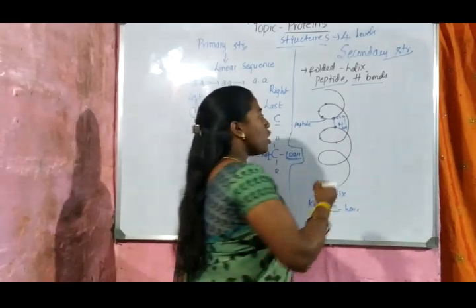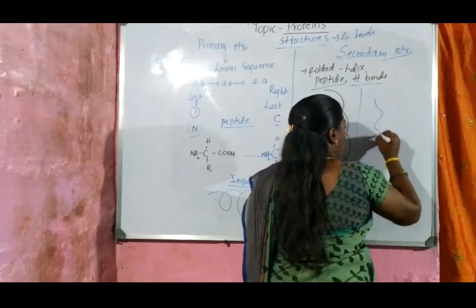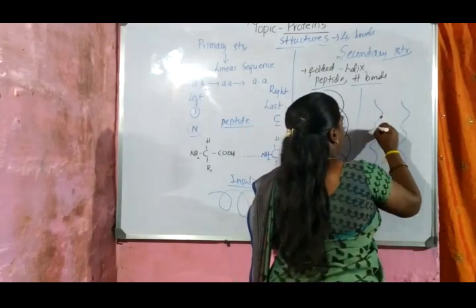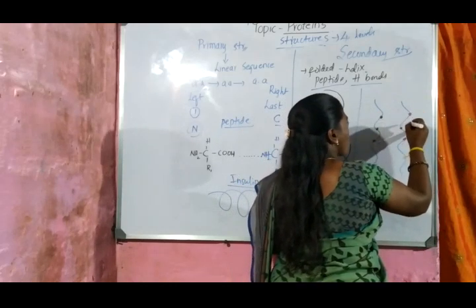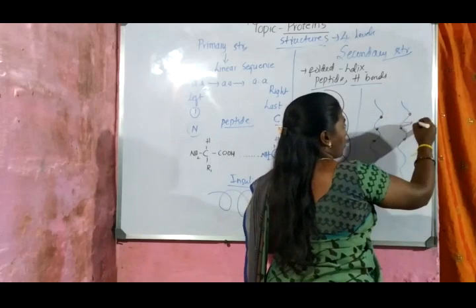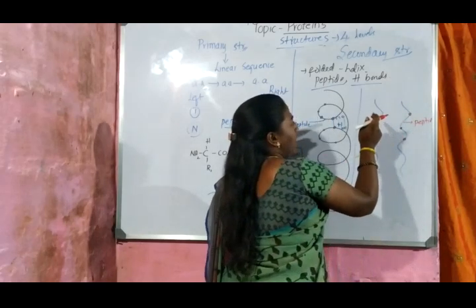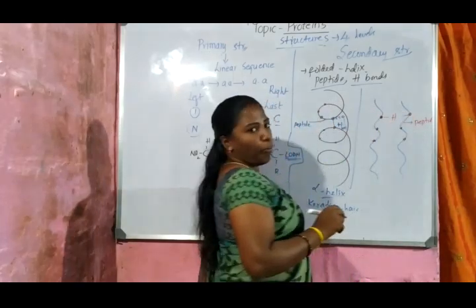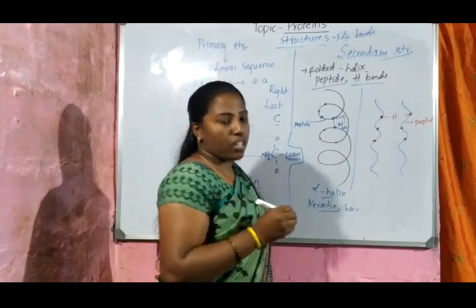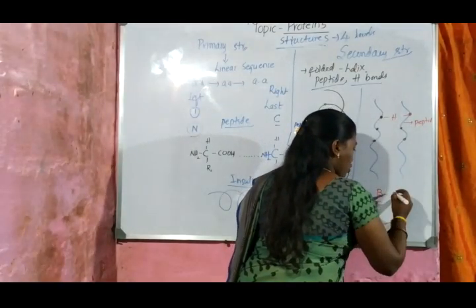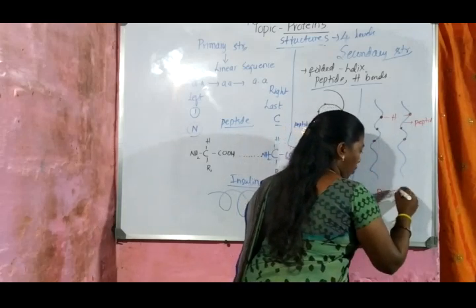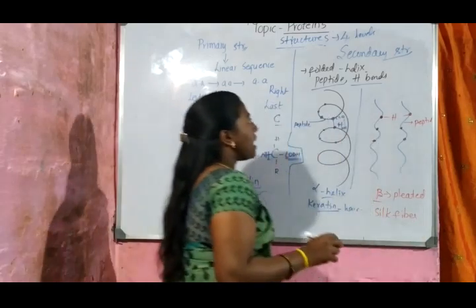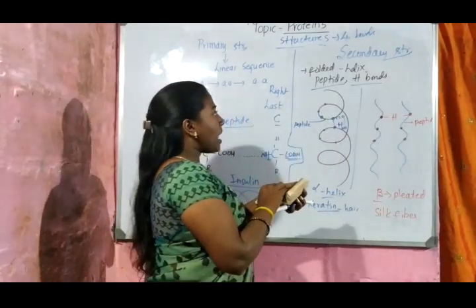Another secondary structure is the beta-pleated sheet, formed when hydrogen bonds form between amino acids of two adjacent polypeptide chains. The result is a beta-pleated structure, with silk fiber as the classic example.